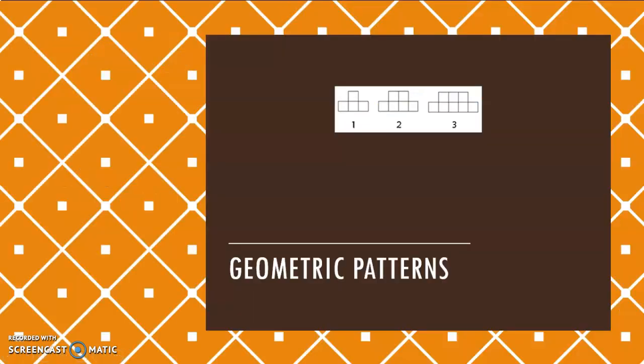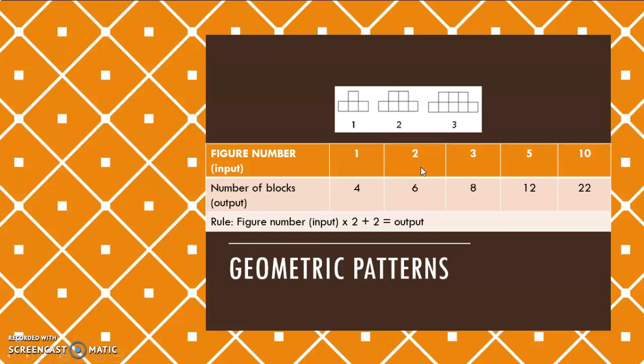Now, sometimes it is given like this. And here it's important to know that these numbers here at the bottom, my figure numbers, is my input value. My blocks here are my output values, and I need to find the rule that will take me from my input to my output. And remember, my rule must stay consistent.